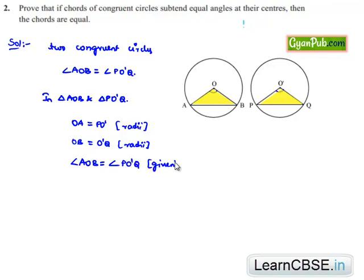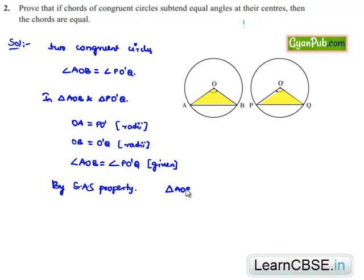Now, by the SAS property of congruency, we can say triangle AOB is congruent to triangle PO'Q.